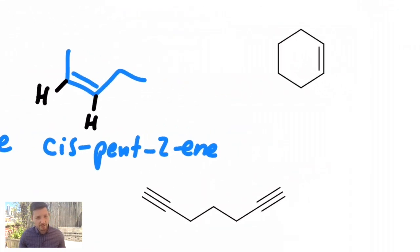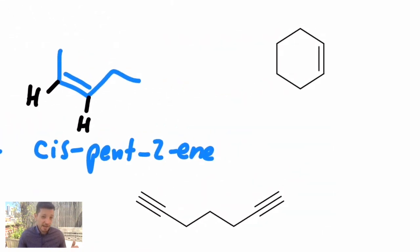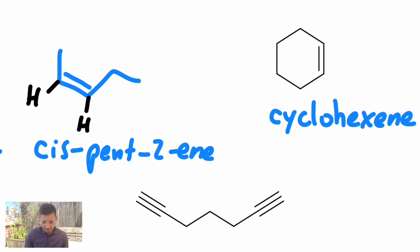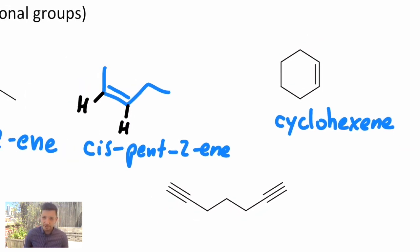What about if the functional group is in a cyclic compound like this? Same thing, you just change the suffix. So this was cyclohexane, we make it cyclohexene. Since there's nothing else in this molecule, numbering it with a one is redundant, so we don't even bother.